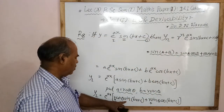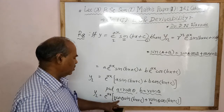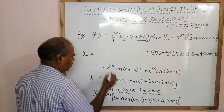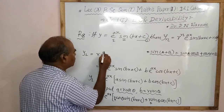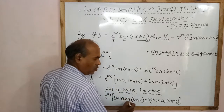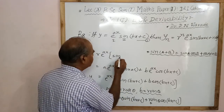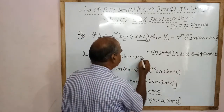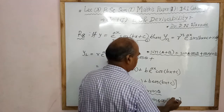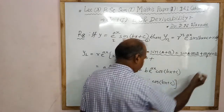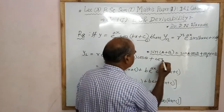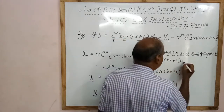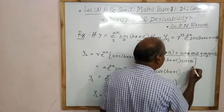Therefore, y1 equals r to the power x, times the second term sine of bx plus c, then the first term cos of theta, plus the term cos of bx plus c multiplied by sine theta.